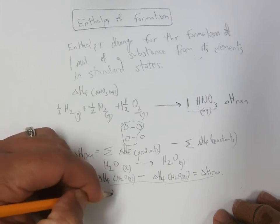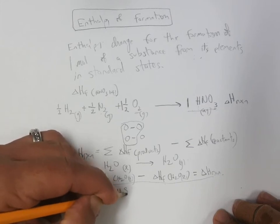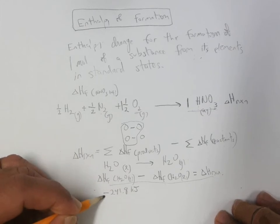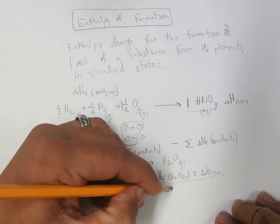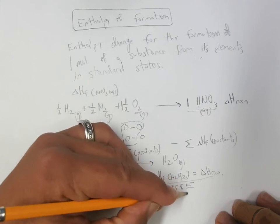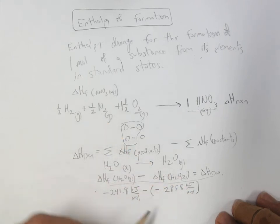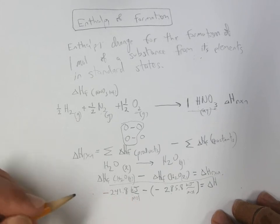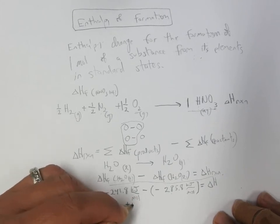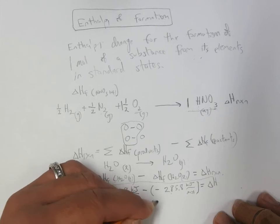And so I think I remember these values, minus 241.8 kilojoules per mole for the water gas, minus a negative 285.8 kilojoules per mole for the liquid water. And so it gives a delta H. And if we do the math here, we find out it's plus 44.0 kilojoules per mole.